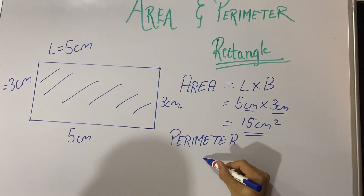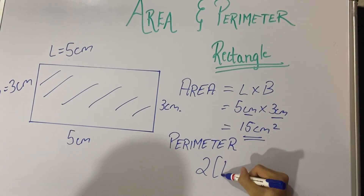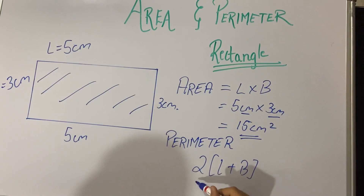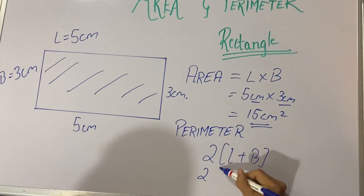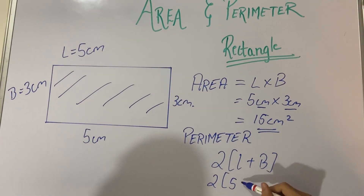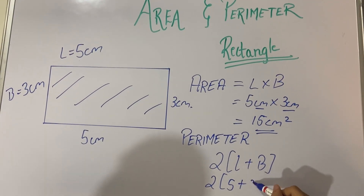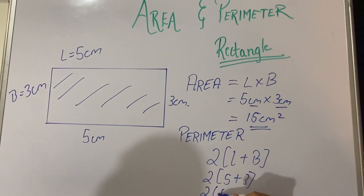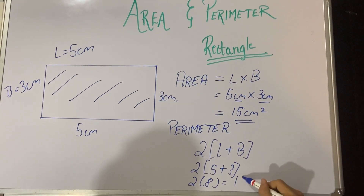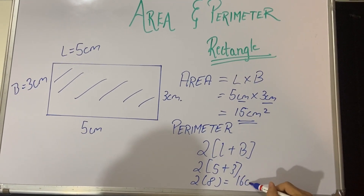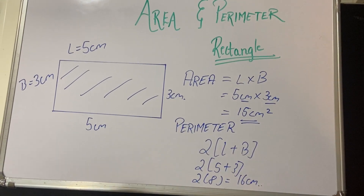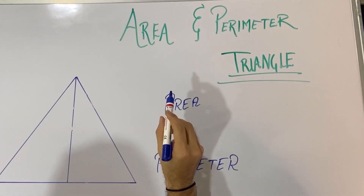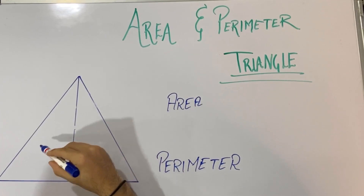The formula for perimeter is 2 into (length plus breadth). Length is 5 and breadth is 3, so 2 into 8 gives me 16 centimeter.